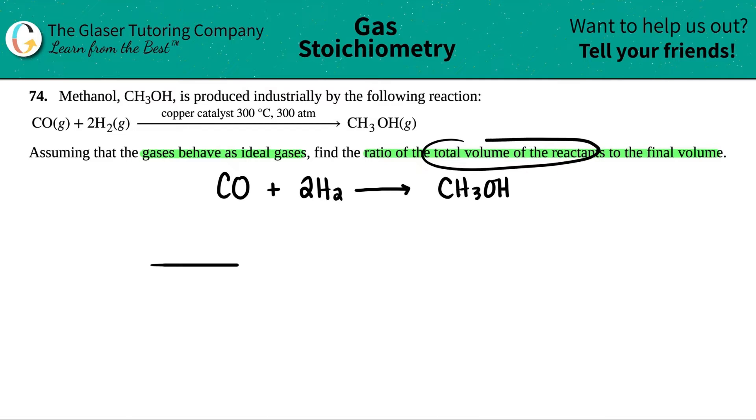So whatever they're talking about first always goes in the numerator. So the volume of the reactants will go on the top, and I'll just put R for the reactants, to the final volume. And the final volume is the volume of the products. So that's basically volume of the products, P's. Now, how are we going to get that number?